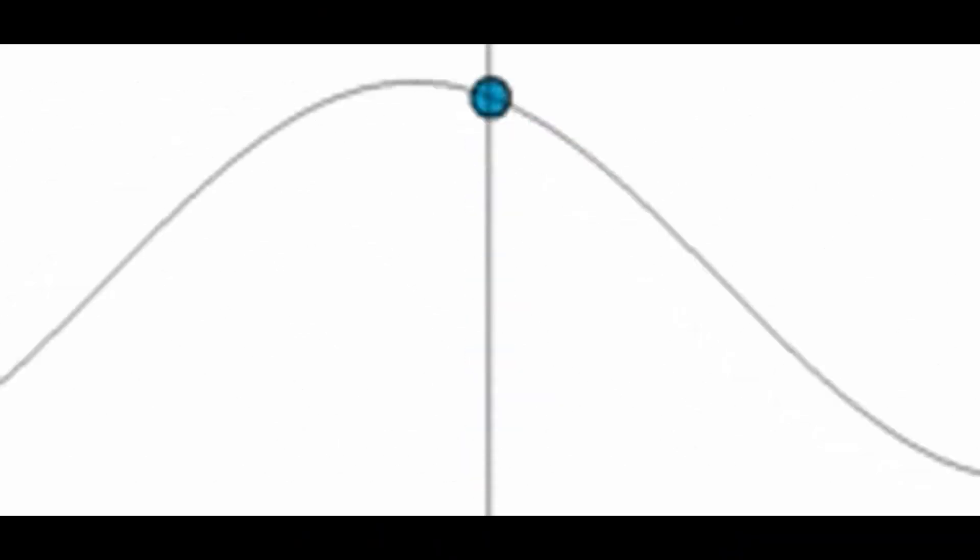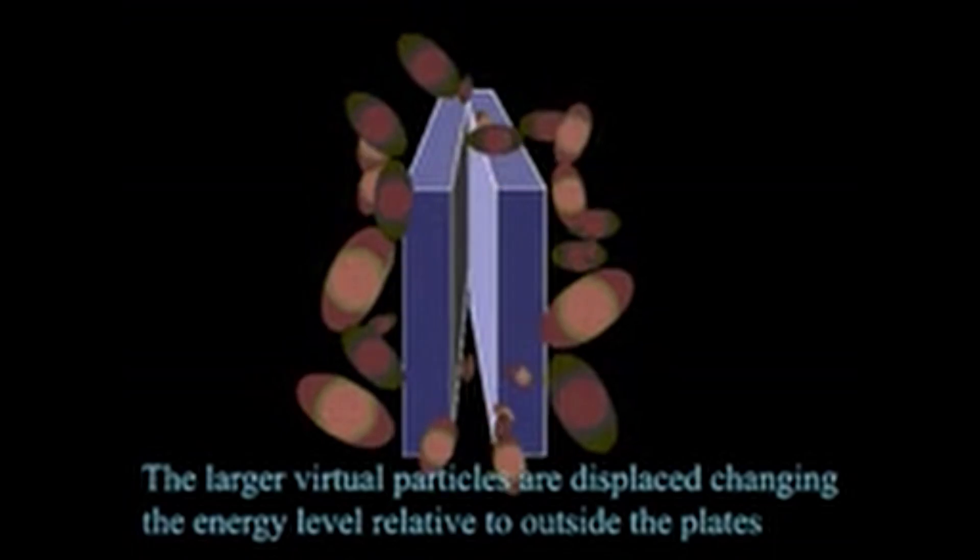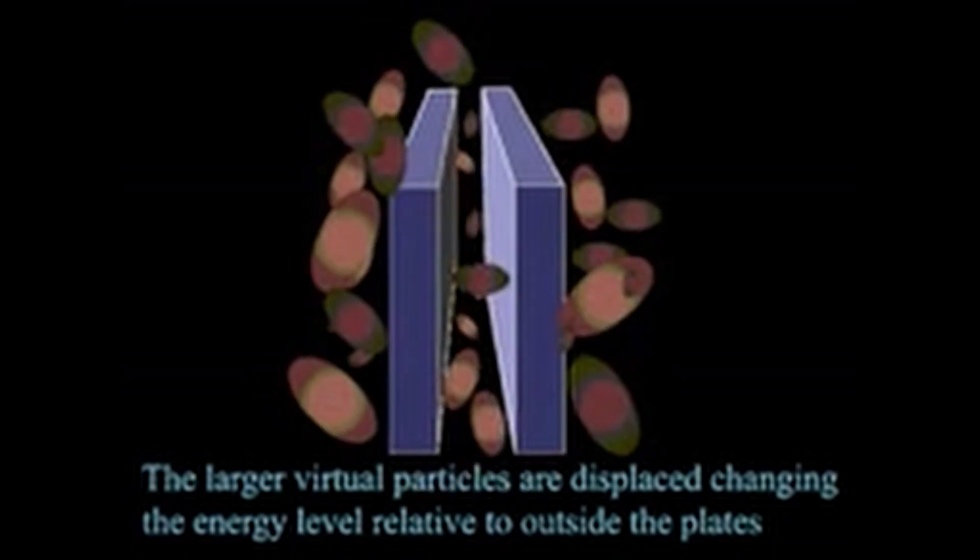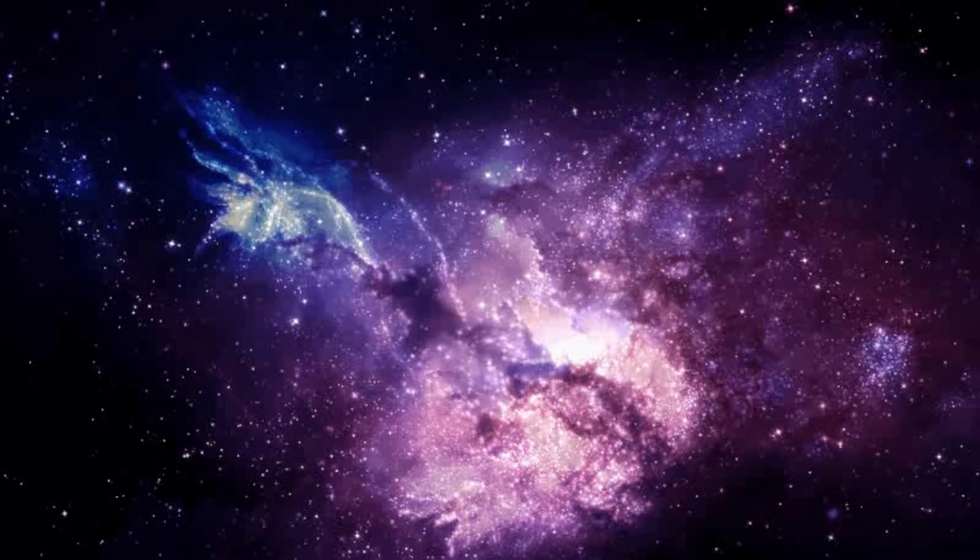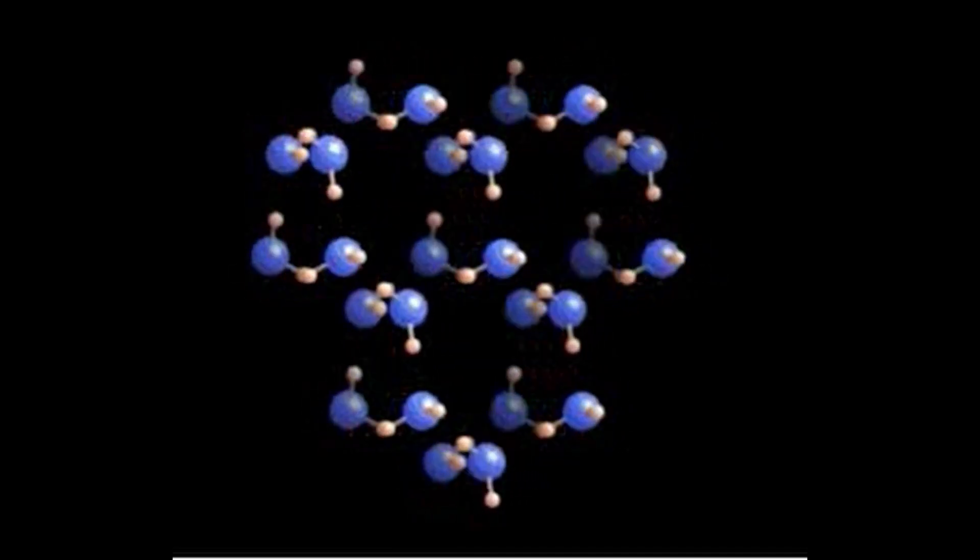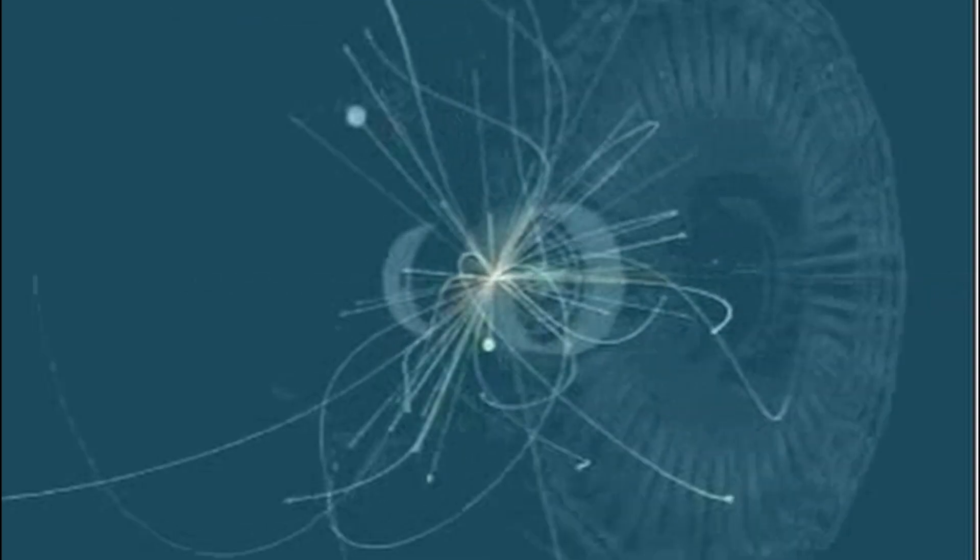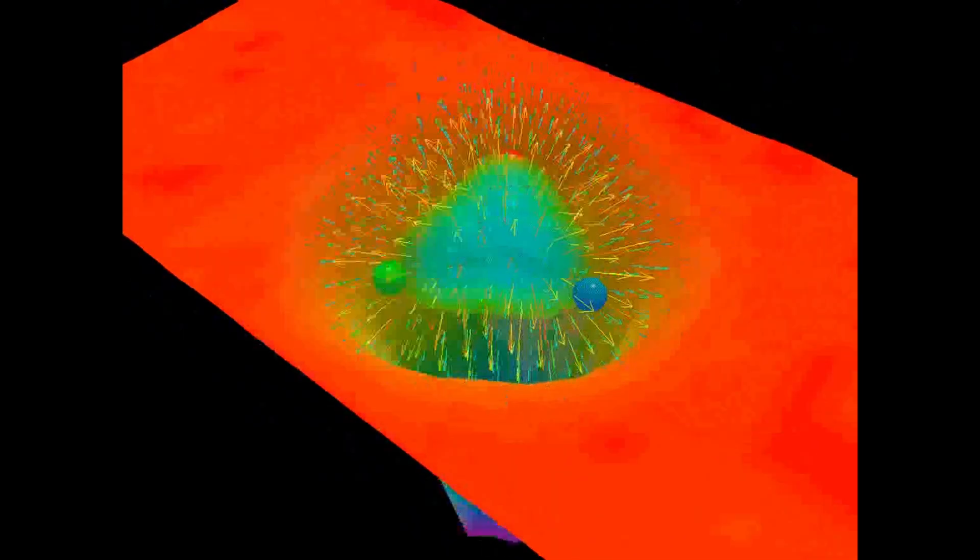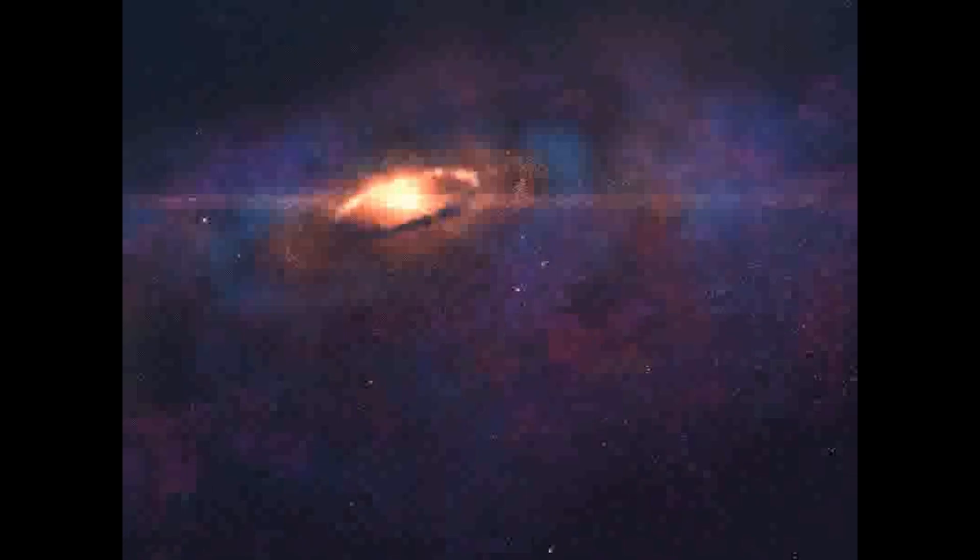Bohmian mechanics must match the predictions of standard quantum mechanics for all known experimental results. So far it achieves this without contradiction, implying it can model quantum phenomena consistently. Bohmian mechanics inherently includes non-locality, a characteristic upheld by entanglement experiments supporting Bell's theorem. This is a good indication that Bohmian mechanics can account for all quantum phenomena accepted experimentally.